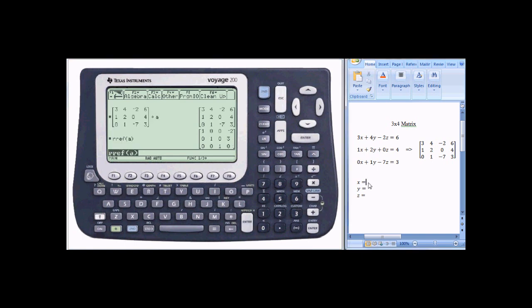And here we see the values for X, Y, and Z. X is negative 2, Y is 3, and Z is 0. This can be seen from the last column with the matrix in reduced row echelon form.